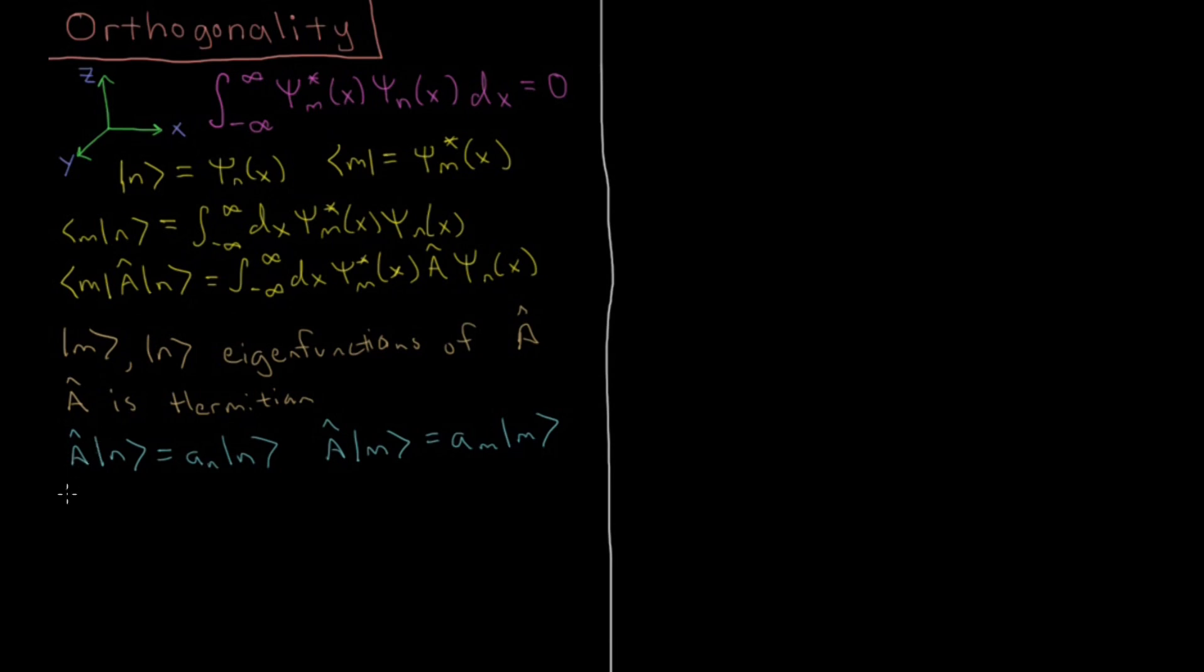Looking at specific integrals here, if we have the integral m, a, n, which would be defined as we defined it up here, then that is equal to m, a acting on n just returns a_n, the n-th eigenvalue. Then once that eigenvalue is inside an integral, we can just pull it out. And we just have the integral m, n, which is equivalent to this integral we have up here, the overlap of those two, it would be zero if they are orthogonal.